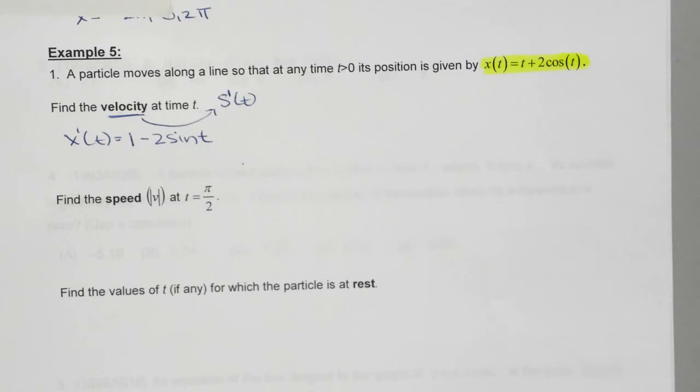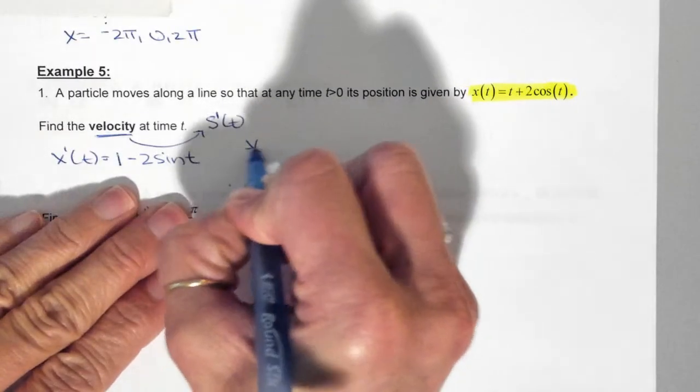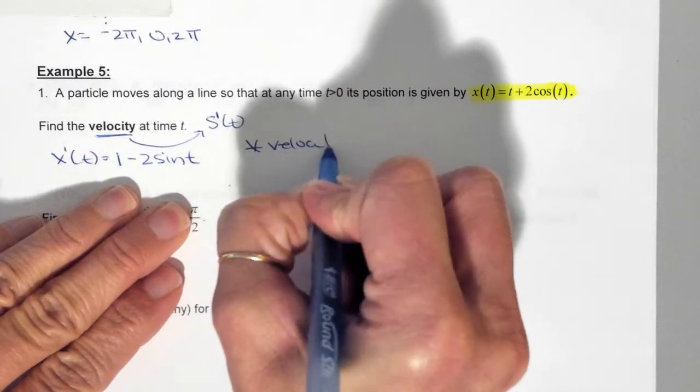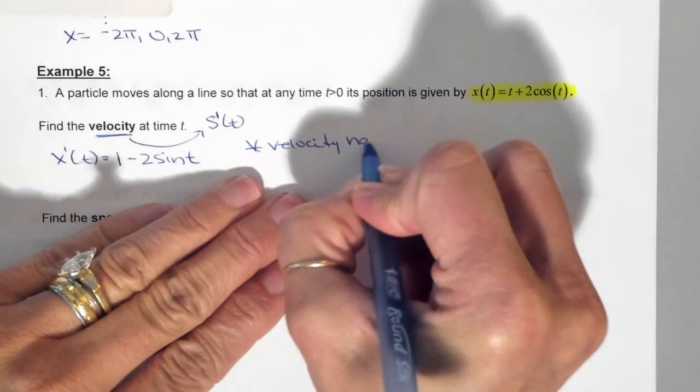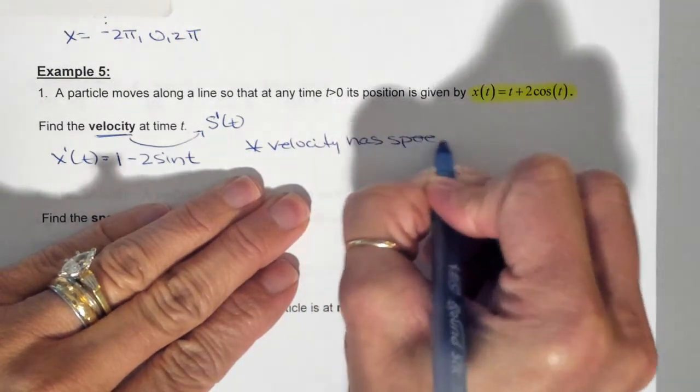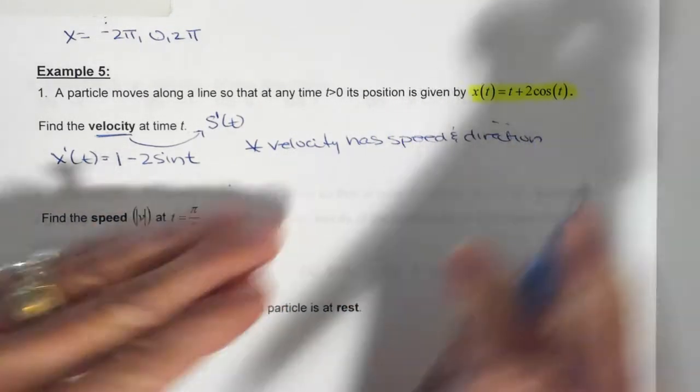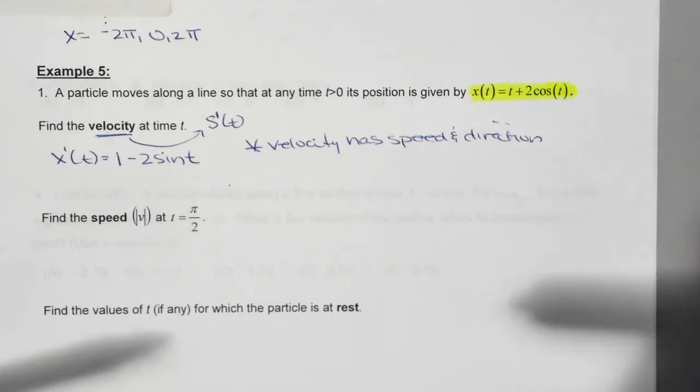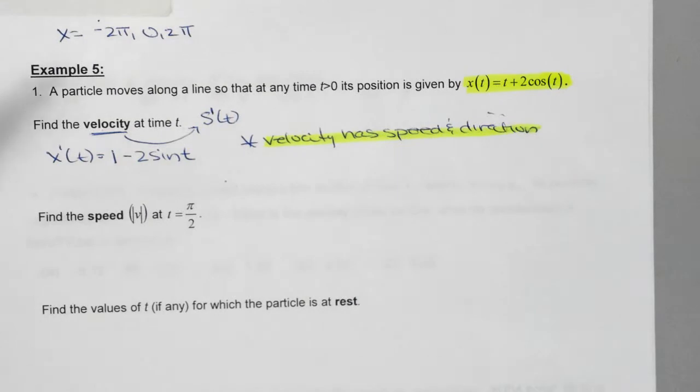Velocity can be negative. What does that mean? You're moving in the opposite direction. So here, this is important. Velocity. And I'm going to, magnitude is the same thing. Has speed and direction. Which means, it says direction. Velocity can be negative if you want to put it in plain English.